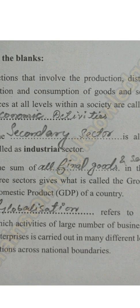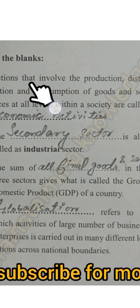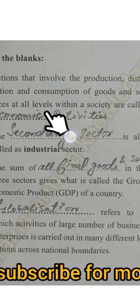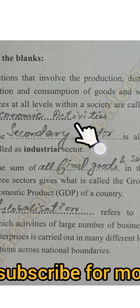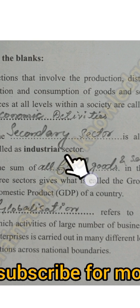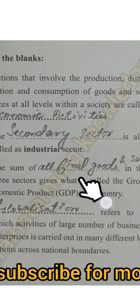Assalamu alaikum dear students, welcome back to my YouTube channel Brainstorming Knowledge. Fill in the blanks: First, actions that involve the production, distribution, and consumption of goods and services at all levels within a society are called economic activities. Second, the secondary sector is also called the industrial sector.